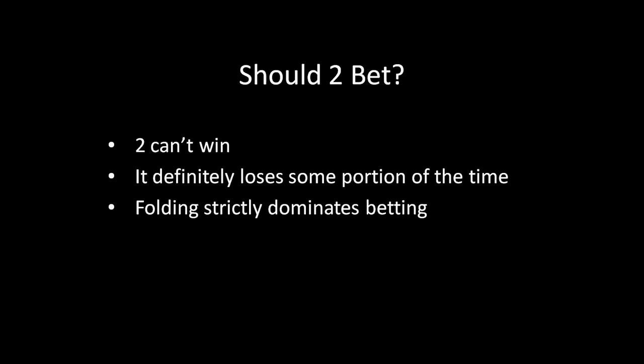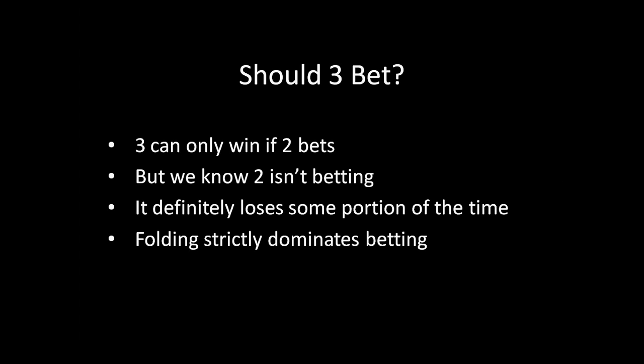Given that ace is betting, what should 2 do? Well, 2 can't win under any circumstances — the best 2 can hope for is a draw if the other player also has a 2. On the other hand, if it bets, it's definitely going to lose some portion of the time now that we know the ace will be betting. That means folding will strictly dominate betting for the 2 type.